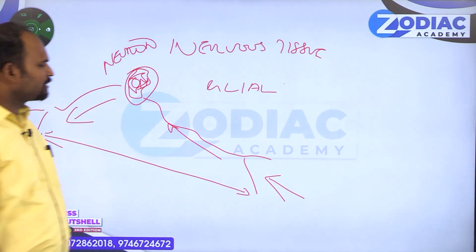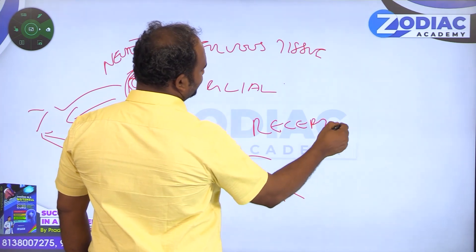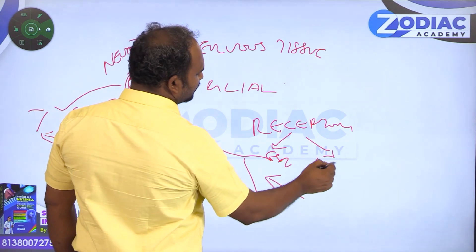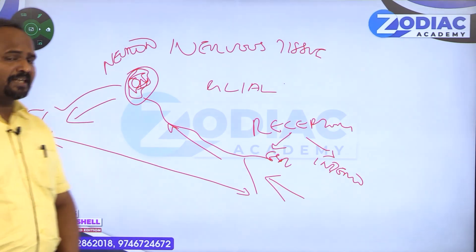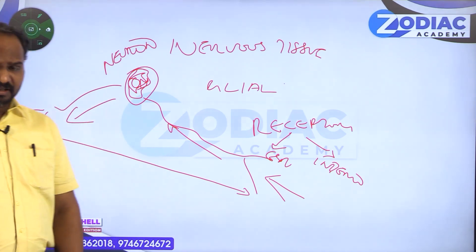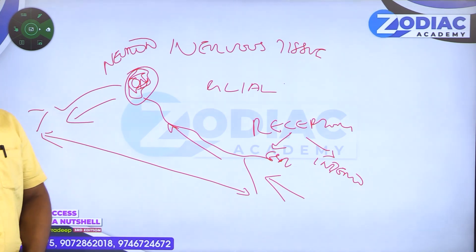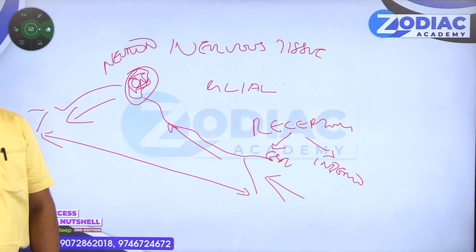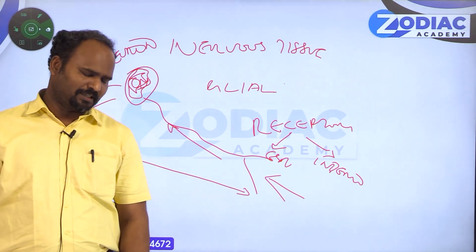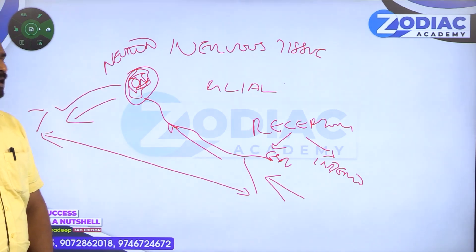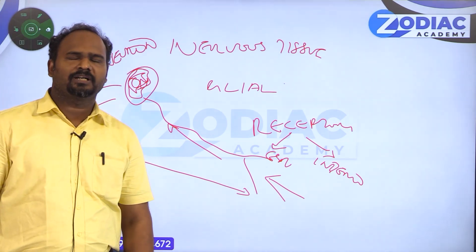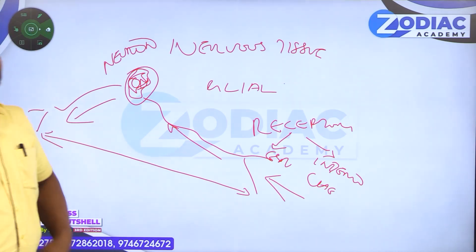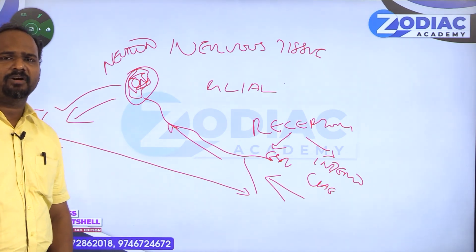The parts of the neuron which receive impulses are called receptors. There are two types of receptors: one is exteroceptor and another one is interoceptor. Exteroceptors are seen in the outer part of the body — for example, visual receptors such as retinal cells (rods and cones), auditory receptors in the organ of Corti, and olfactory receptors. Interoceptors are seen inside the body, such as chemoreceptors, which receive chemical changes like electrolyte changes inside the body.